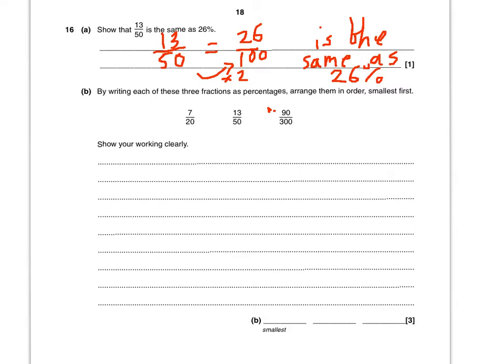Right. Part B. By writing each of these three fractions as percentages, arrange them in order, smallest first.